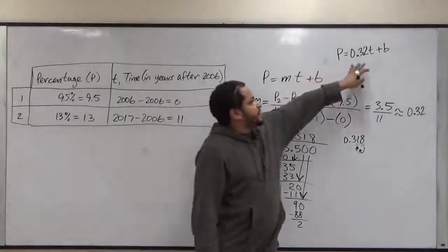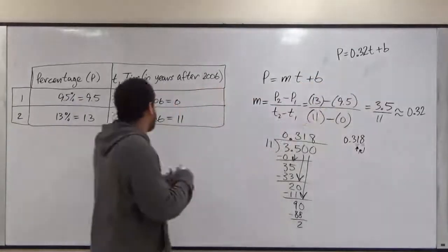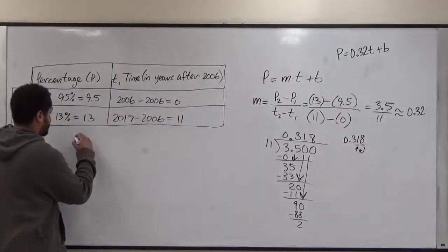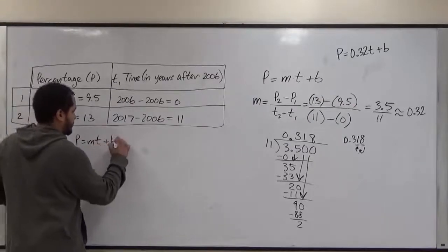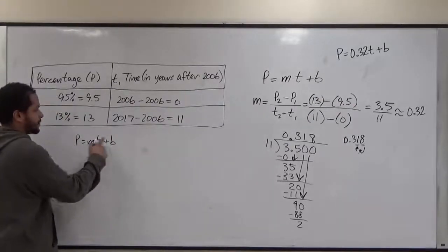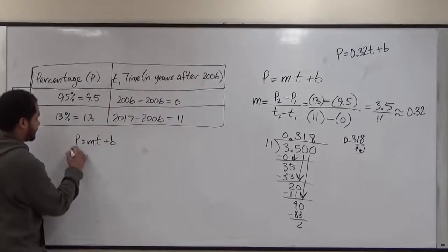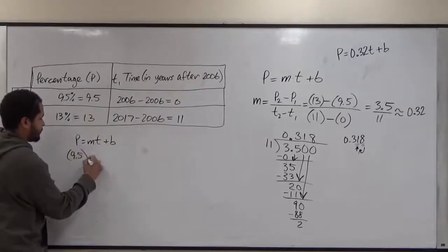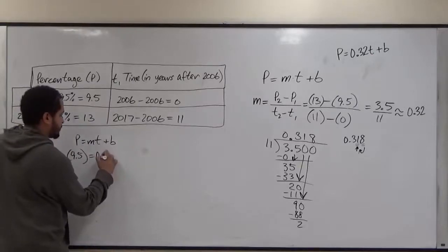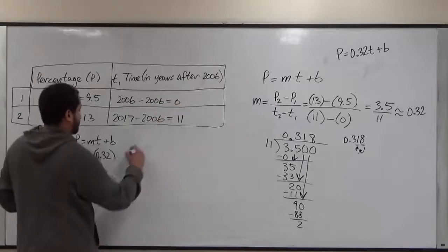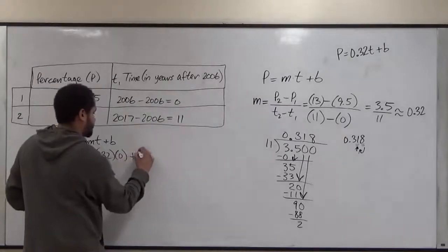We're going to take this very same component where we have p equals m t plus b. And we're going to substitute everything we know. The m is already 0.32. The p value is 9.5. And the m value is 0.32. And here we have the t value is 0 plus the b.